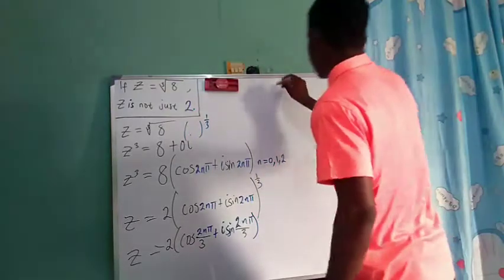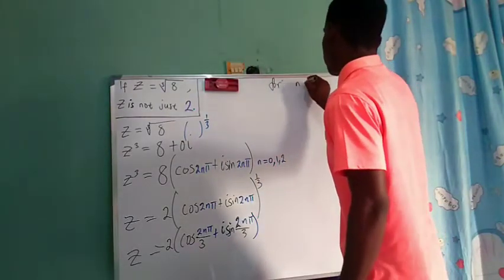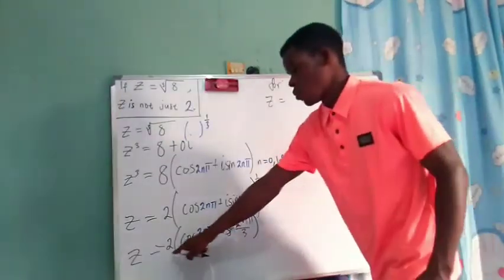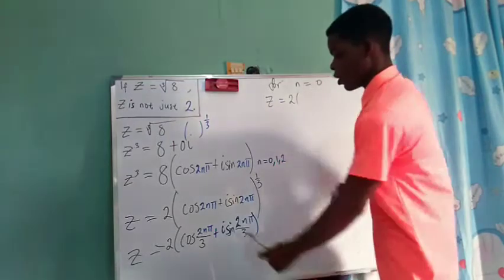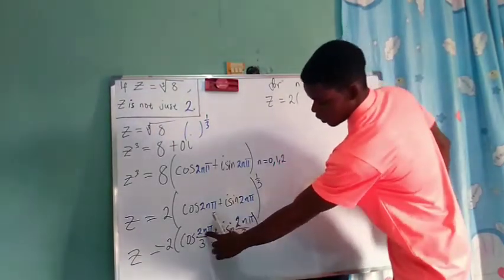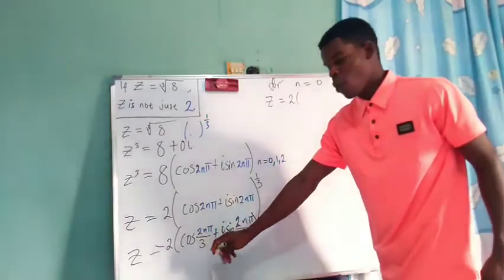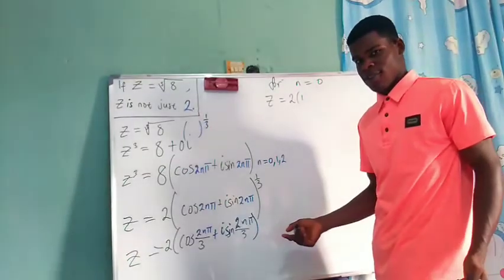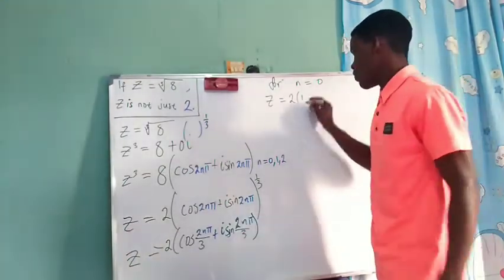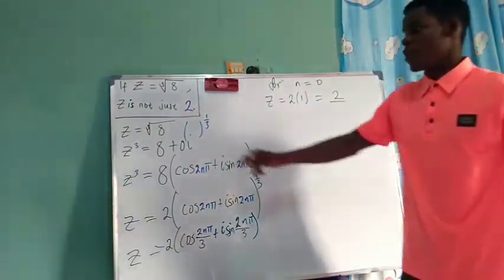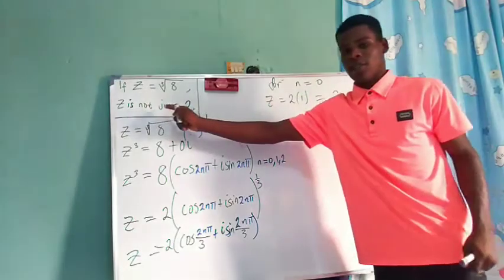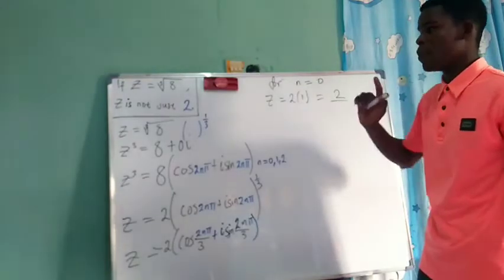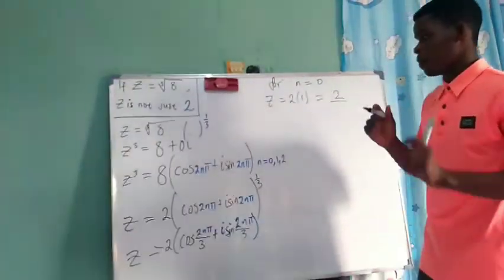For n equal to 0, we plug in 0 here. We get z equals 2 times cosine of 0 plus i sine of 0. Cosine of 0 is 1, and sine of 0 is 0, so we get z equals 2 times 1, which is 2. And that shows us z equals 2 — the real cube root of 8, which we already knew.